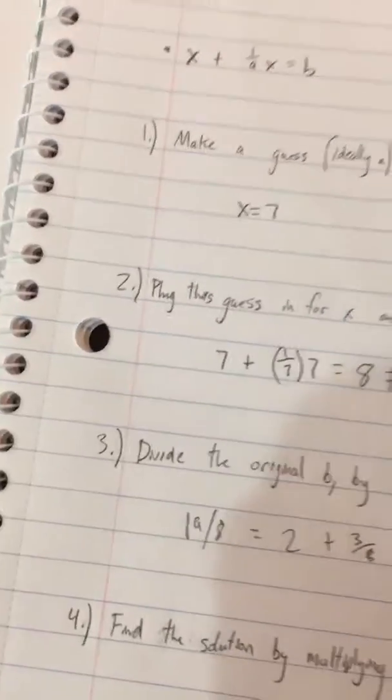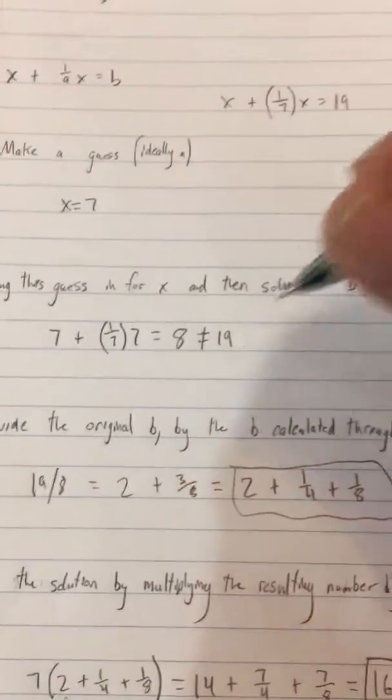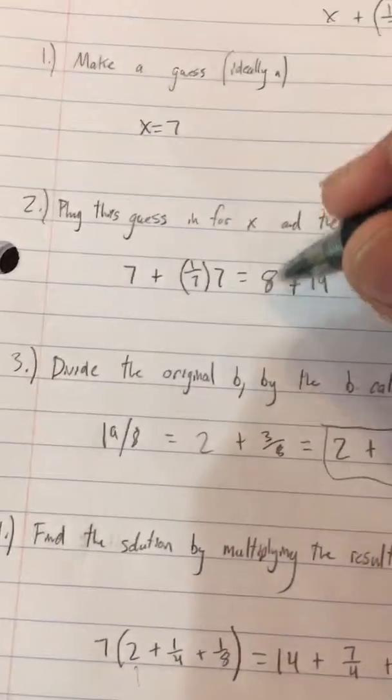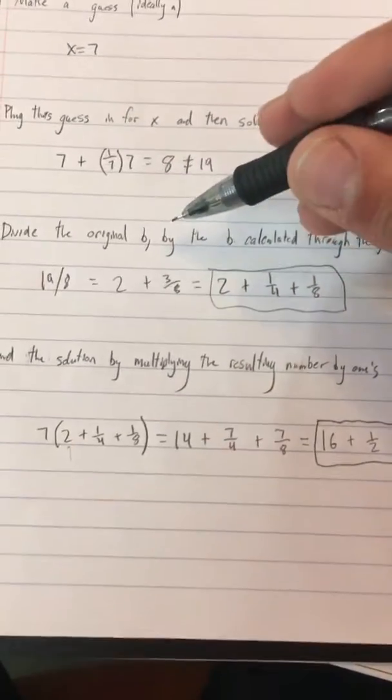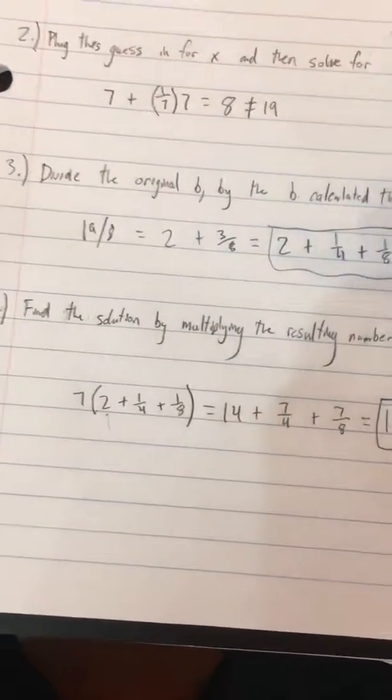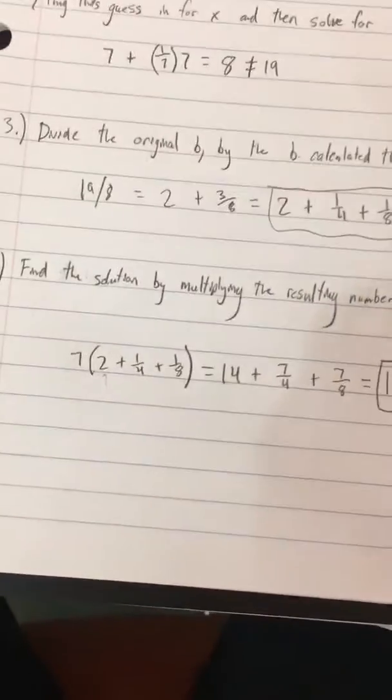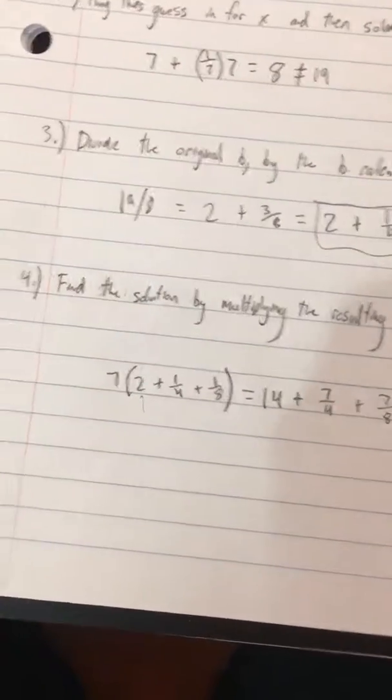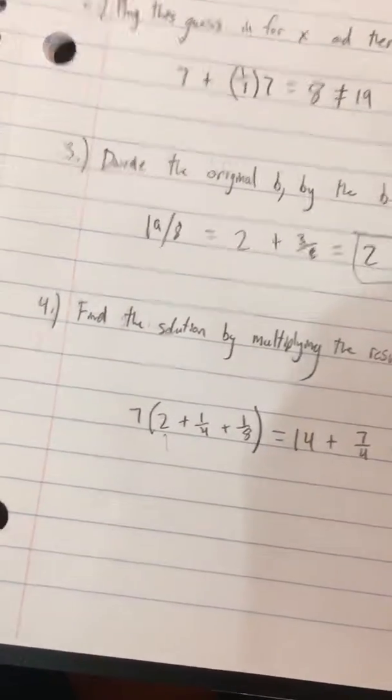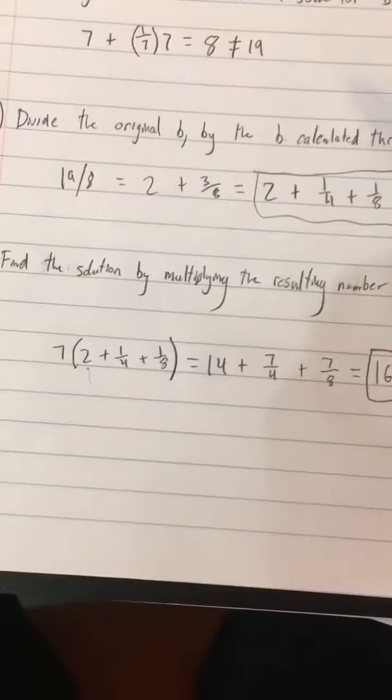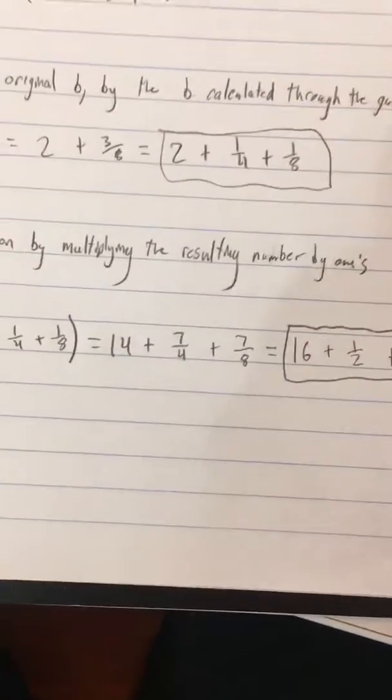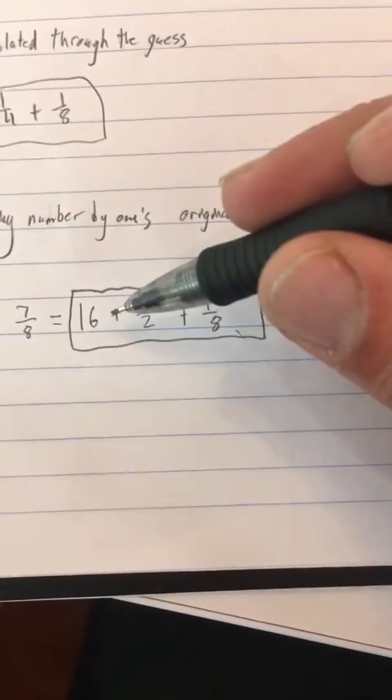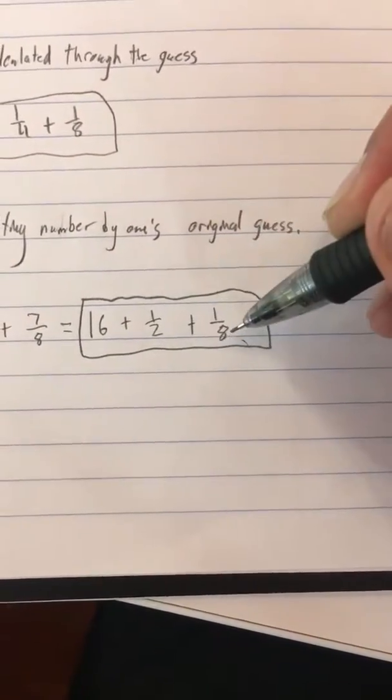And then, we plug in for x and then we solve for b, which gives us our clearly false answer of 8. And then, once we get that answer, we want to divide our original b by the b that we just calculated. So we're going to take 19 divided by 8 and take that product. I mean, we want to take that quotient and then multiply it by 7, which is our original guess, in order to give us the final product, which is x, which in our case is 16 plus 1/2 plus 1/8.